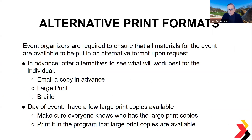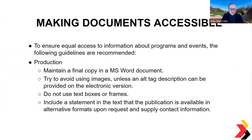For alternative print formats, you can email attendees a copy in advance or provide large print or braille on the day of the event. Have a few large print copies available and make sure everyone knows they're available — put it in the program that large print copies are available upon request. Ensure documents are accessible: use Microsoft Word format, avoid images unless an alt tag description can be provided on the electronic version, do not use text boxes or frames as screen readers cannot read them. Include a statement that the publication is available in an alternative format upon request, with contact information.